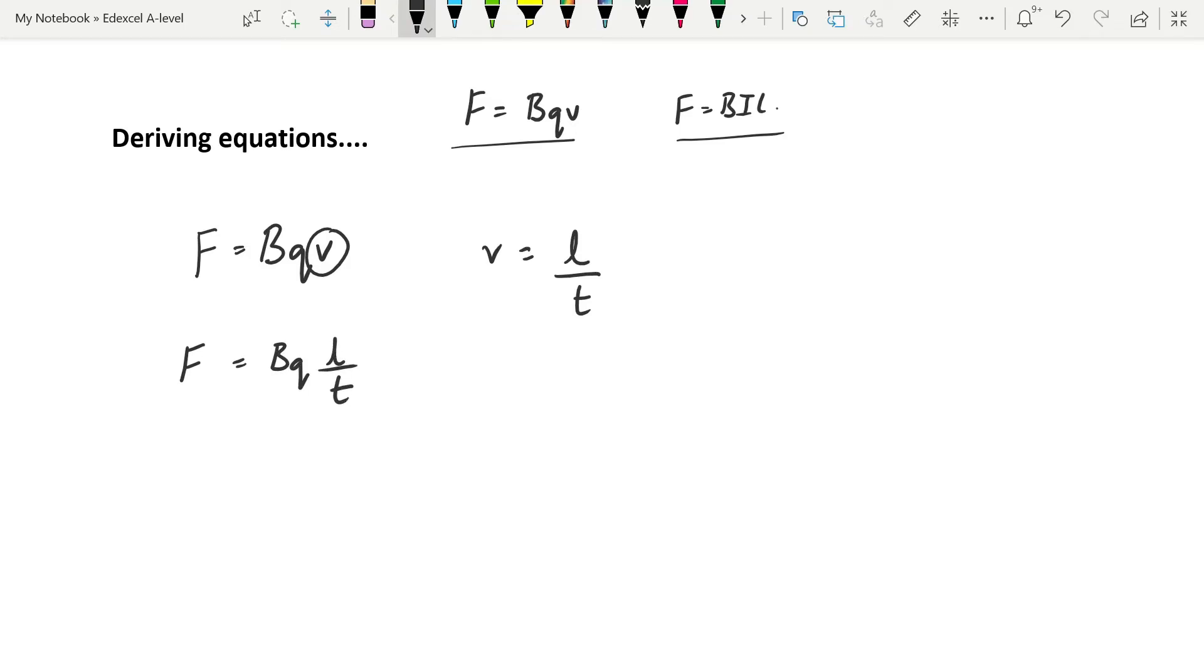But of course if we move the t instead of it being under the l to under the q, q over t is our current. So how fast our charged particle is going to move through that wire gives us current, leading us rather nicely to b i l.